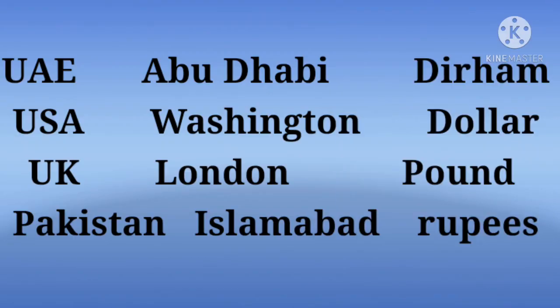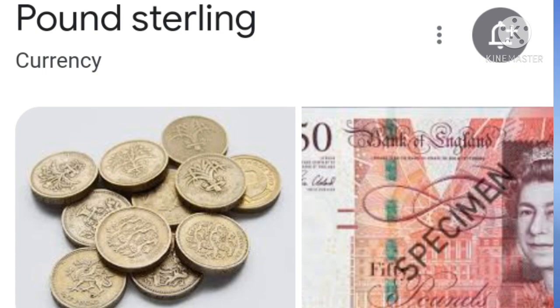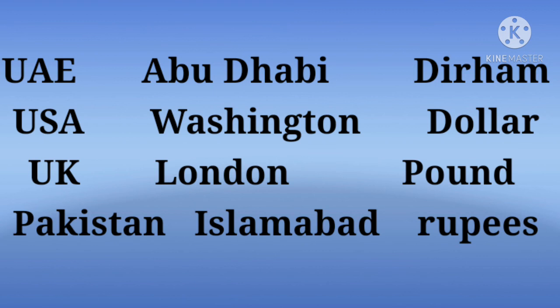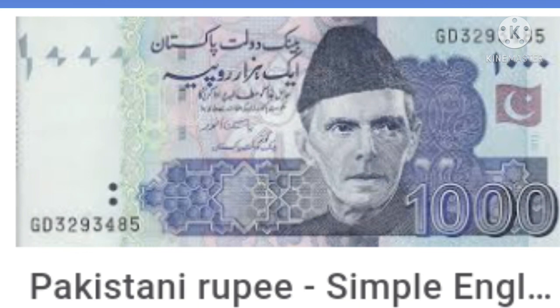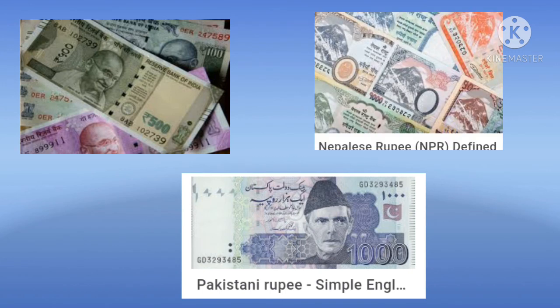Next country is UK, United Kingdom. Its capital is London and currency is Pound. Have a look at this picture. Next country is Pakistan, our neighbouring country. Its capital is Islamabad and currency is Rupees. These rupees are not the same as ours — Pakistani Rupees are different from Indian Rupees and Nepalese Rupees.